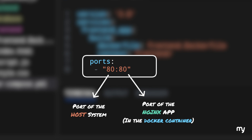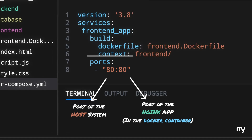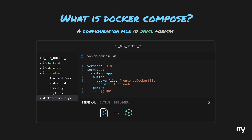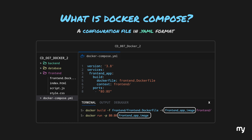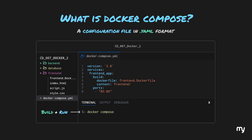This allows traffic from your computer's port 80 to flow into port 80 of nginx inside the Docker container. Previously we used two commands — docker build to build an image and docker run to run it as a container. With Docker Compose we do both in one go using docker compose up, which automatically picks up the docker-compose.yaml from the current directory.